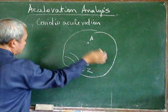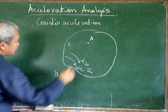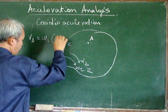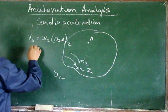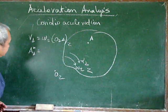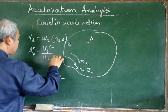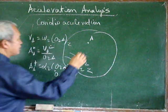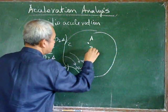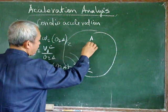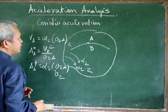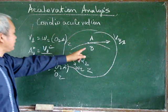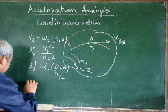In this case, let us have body 2 moving around point O. The velocity of point A can easily be determined by our equation: omega 2 times O2A. The acceleration of point A has two components — the normal and the tangential. Now, if there is another point B coincident to point A, and point B is moving on that body along a certain path at a certain velocity V_B with respect to A, then the total acceleration of point B is given by this equation.